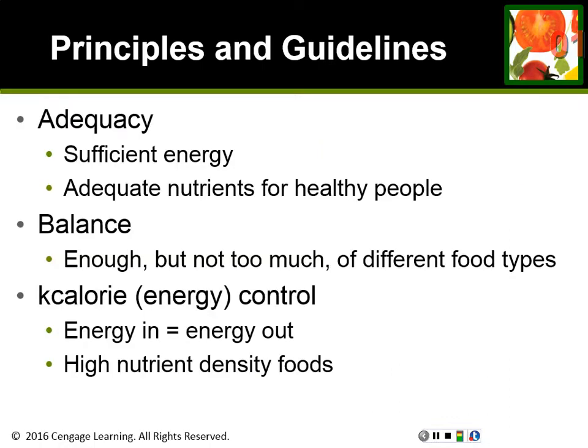The chapter starts out talking about six diet planning principles. Sometimes I leave these out — I think they're good, but they are very vague, so it can be kind of hard to understand these concepts. Sometimes I think just diving right in and talking about the actual foods is better, but let's quickly go over them.